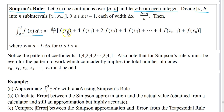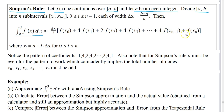Notice the pattern: f of x0 plus 4 times f of x1 plus 2 times f of x2 plus 4 times f of x3, and so on. And then we end with 4 times f of x(n minus 1) plus 1 times f of xn.